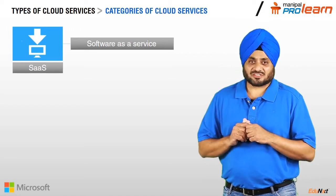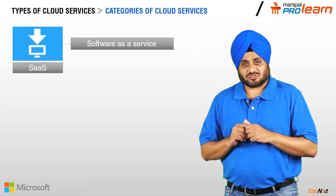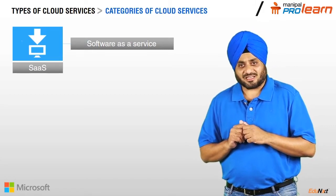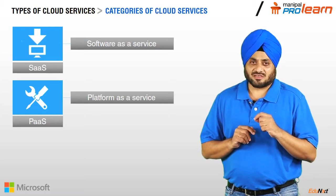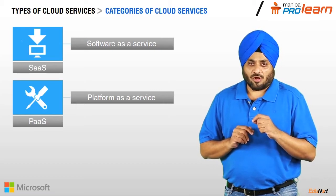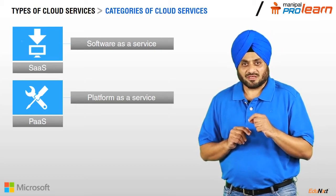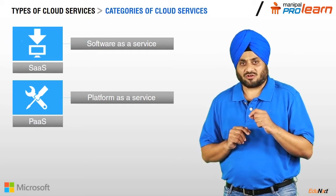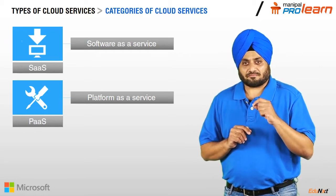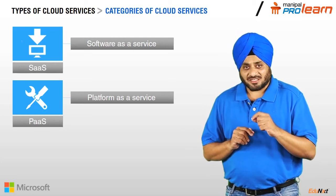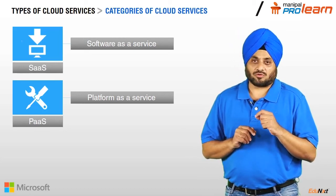Examples of SaaS are email sites and social media sites. PaaS stands for Platform as a Service and is a model in which a developer creates software using tools and other utilities of a cloud provider. An example of PaaS is websites designed, developed and hosted on cloud.